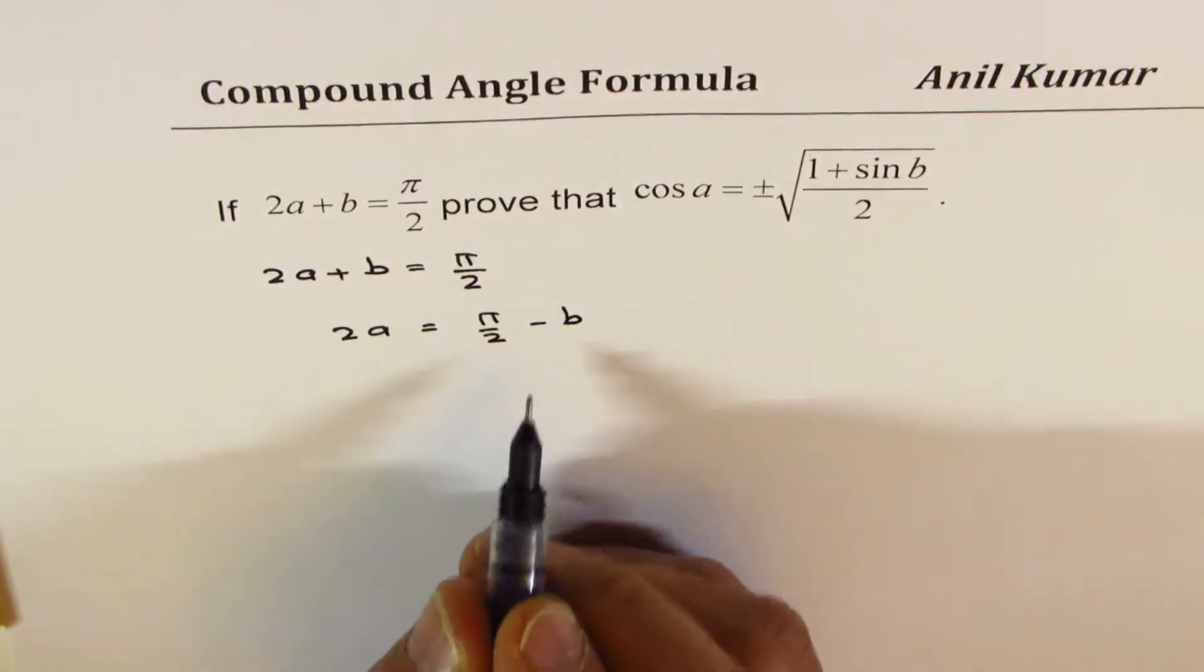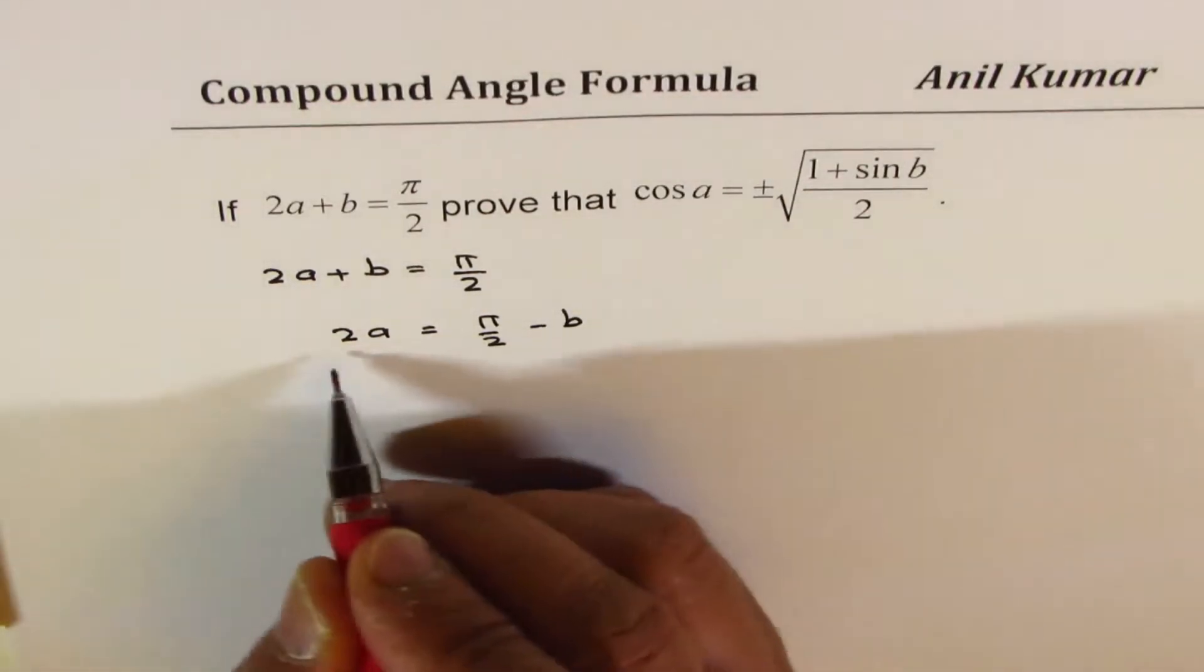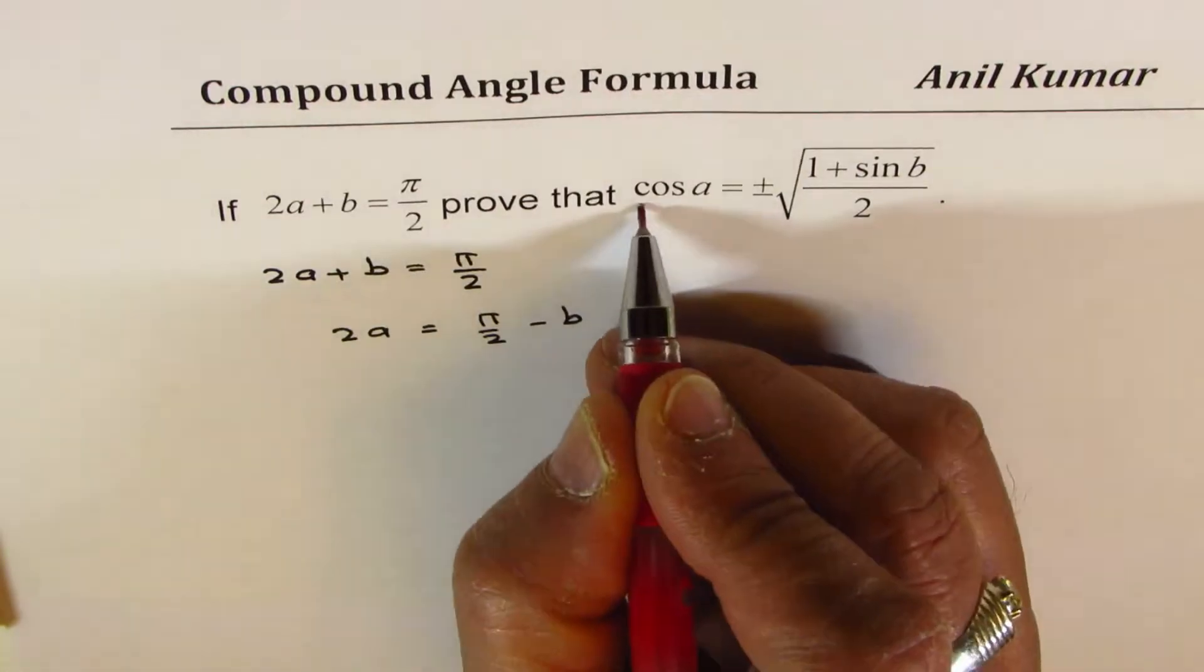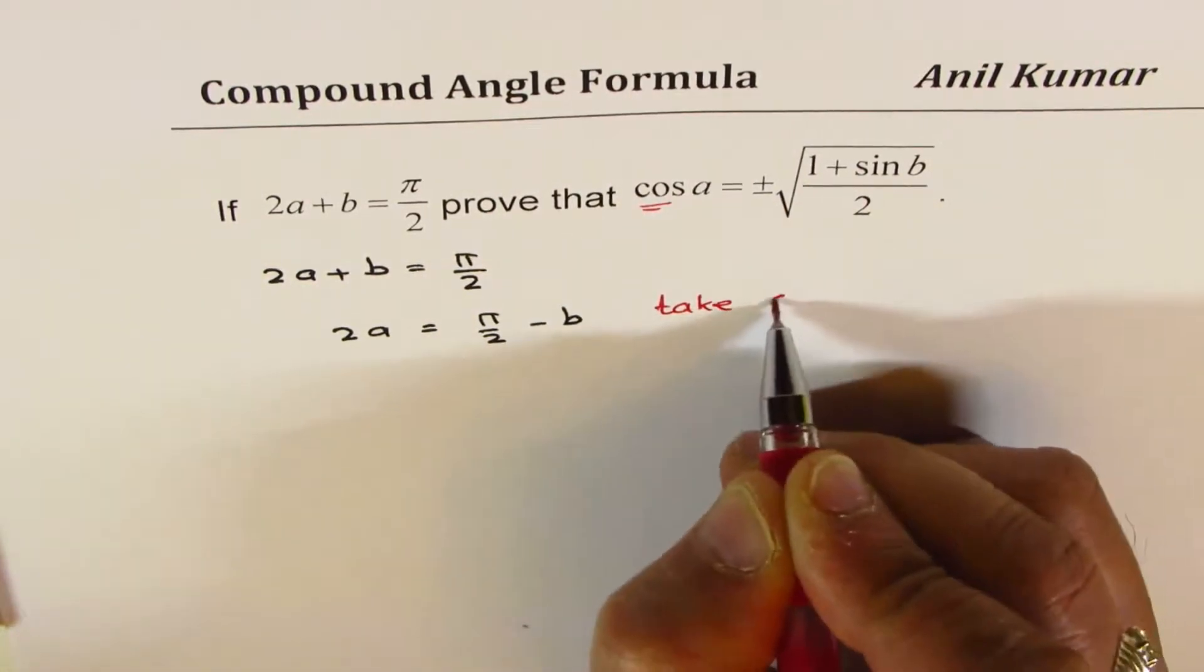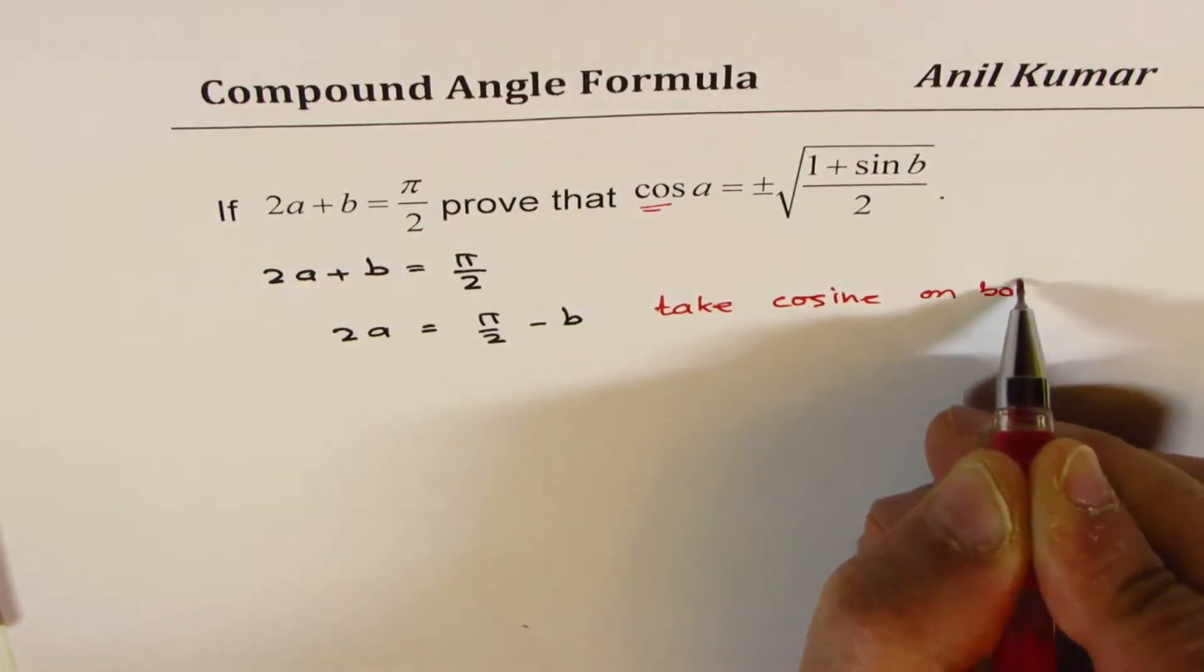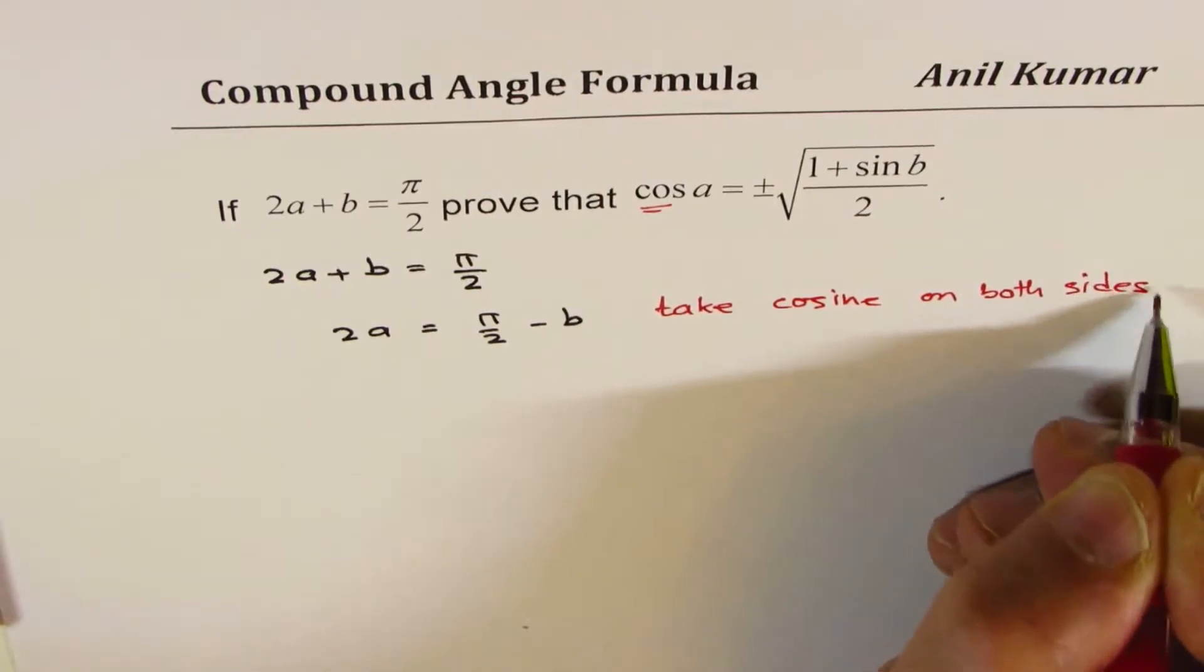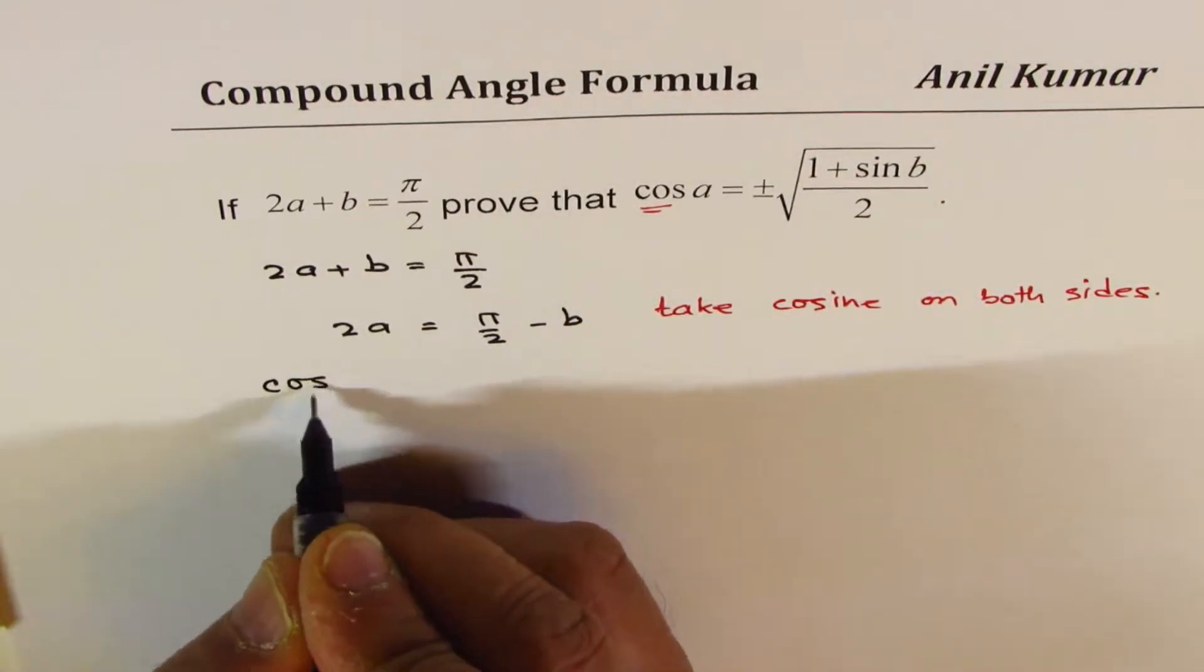Now that is a very critical step. We will take cosine on both sides because we need cos a. So if you do that, it becomes cos of 2a equals to cos of pi by 2 minus b.